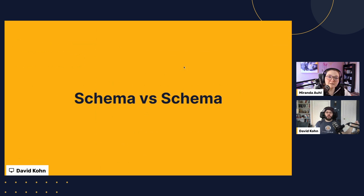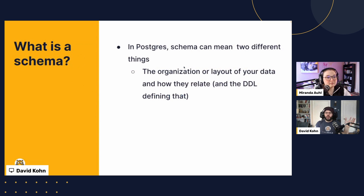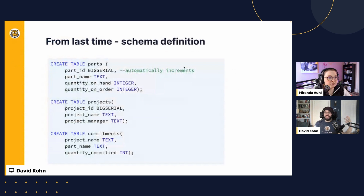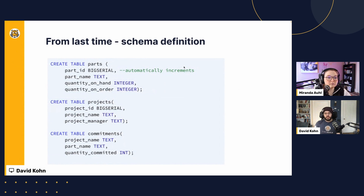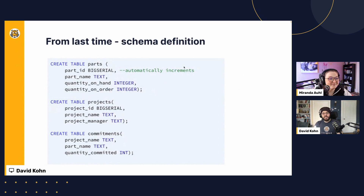We'll start with a couple of concepts. The first is 'schema versus schema,' which may sound weird. This is a word we often use differently in different contexts inside Postgres or SQL generally. It can mean at least two different things: first, the organization or layout of your data and how it relates — sometimes called the DDL defining that. Last time we created a schema in this sense: the way our data was going to be laid out.